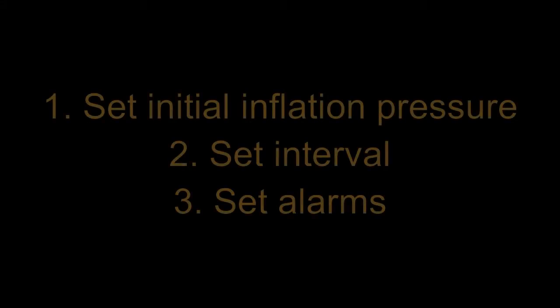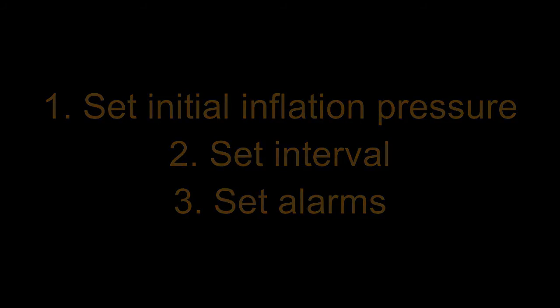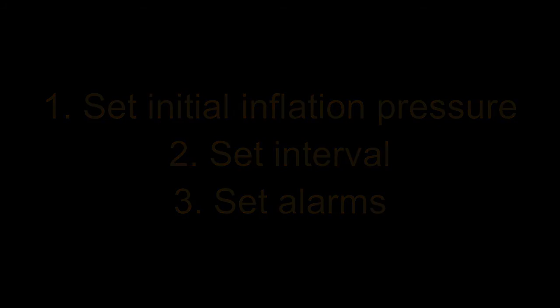The NIBP machine has a variety of parameters that can be adjusted to change how or when it measures the patient's blood pressure. Three functions that are frequently used on automated devices include setting the initial inflation pressure, setting an interval for blood pressure monitoring, and setting alarms. Adjusting these parameters will be different on each NIBP device, but we will demonstrate how to use these functions on one such machine.